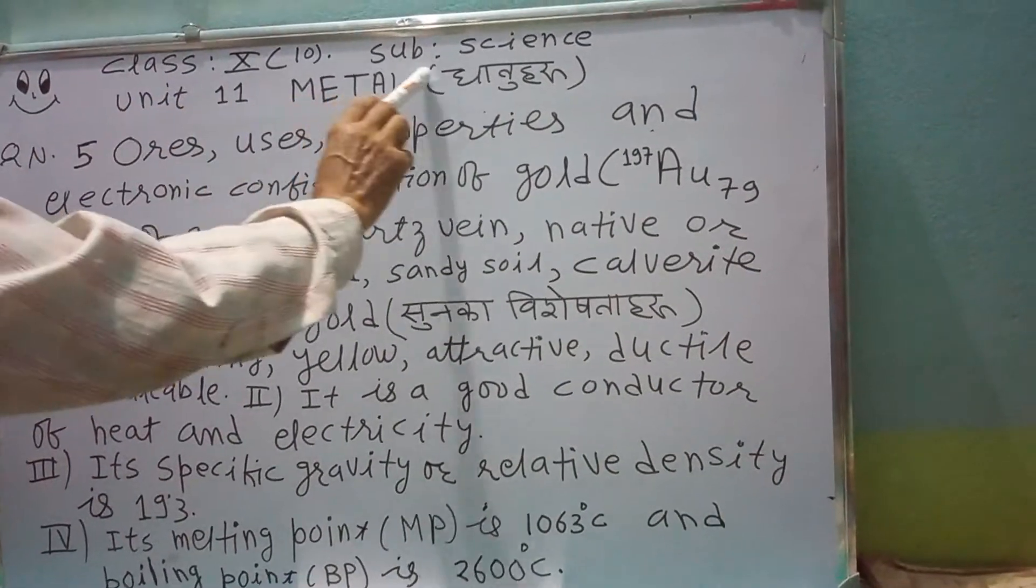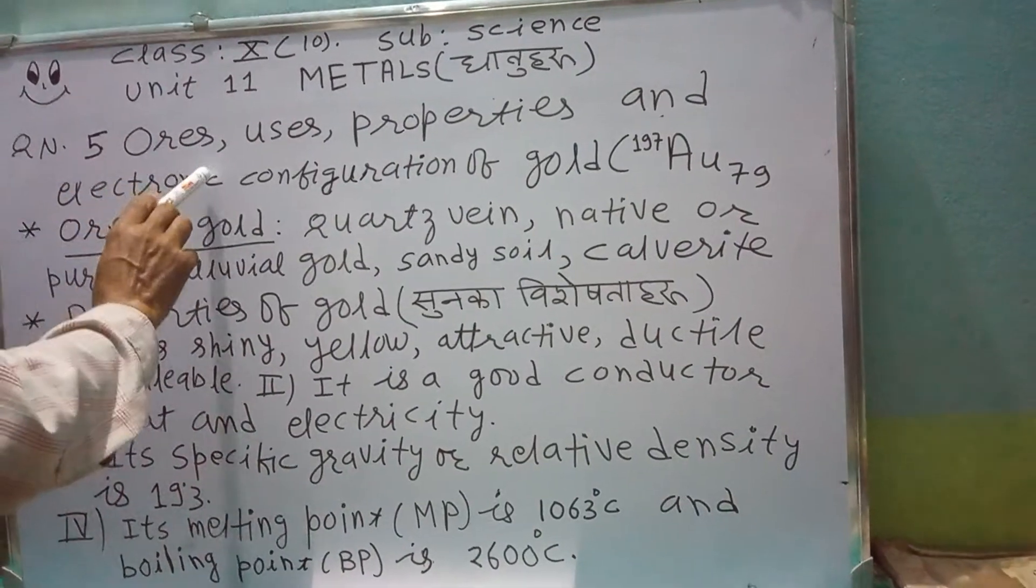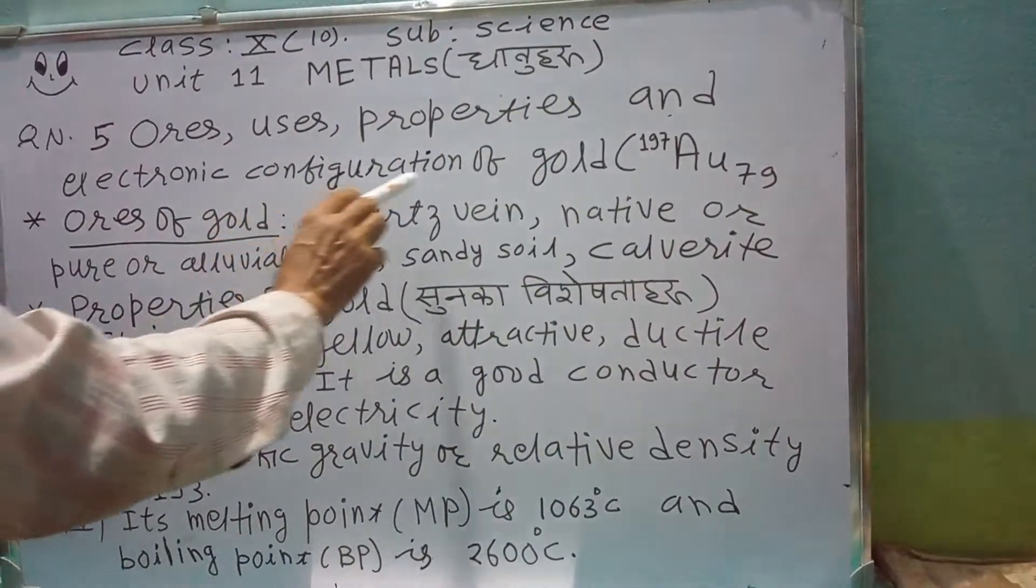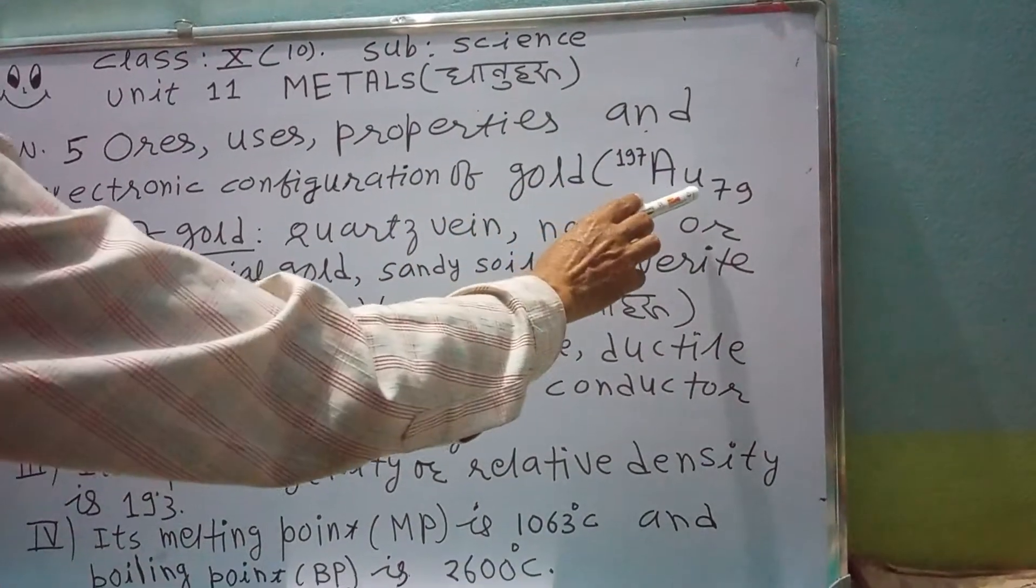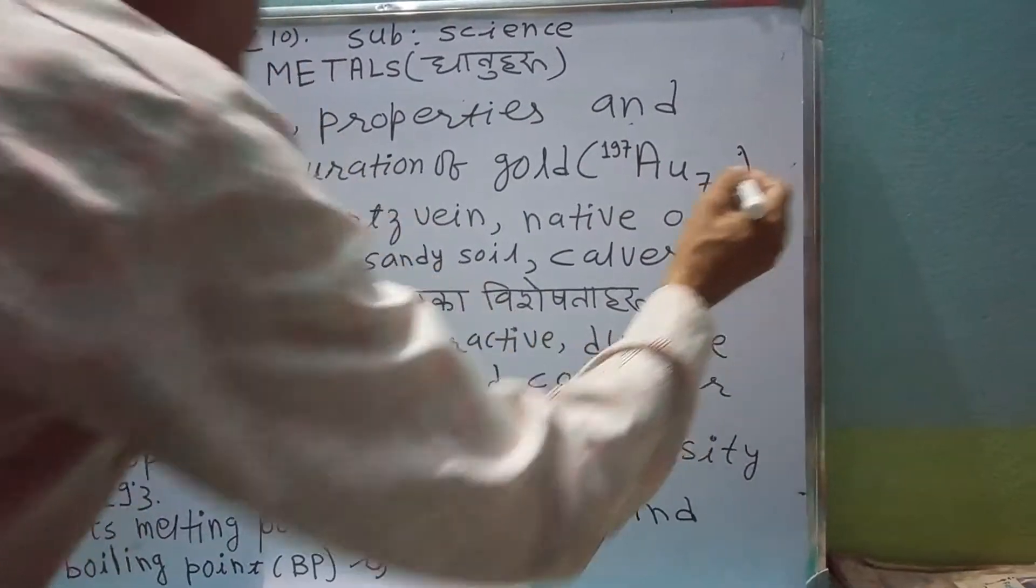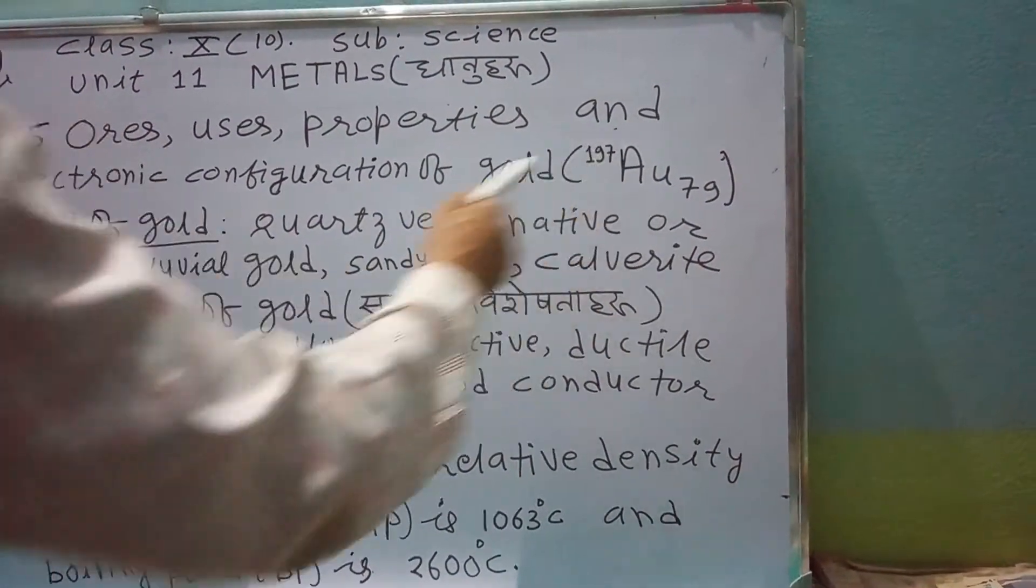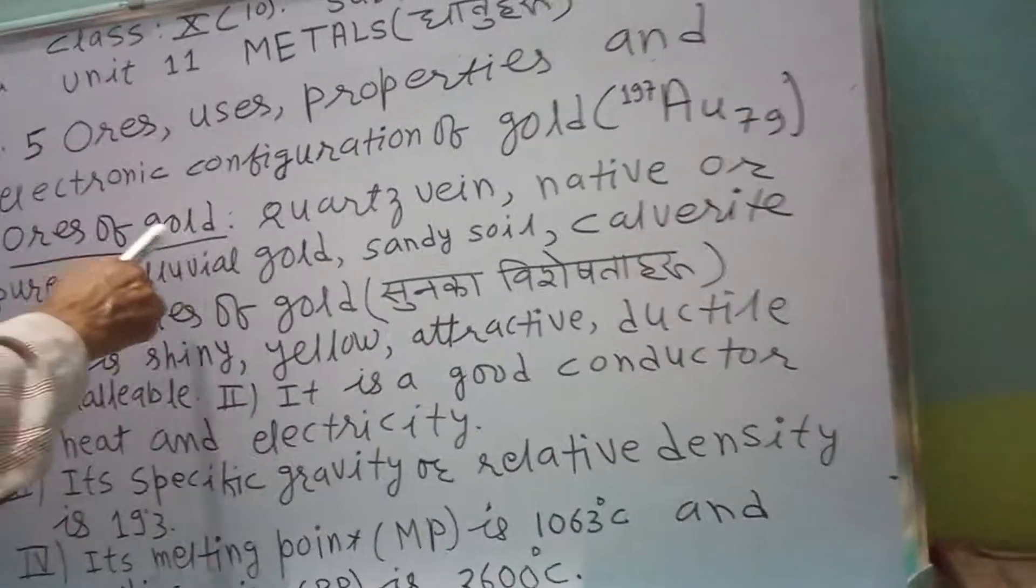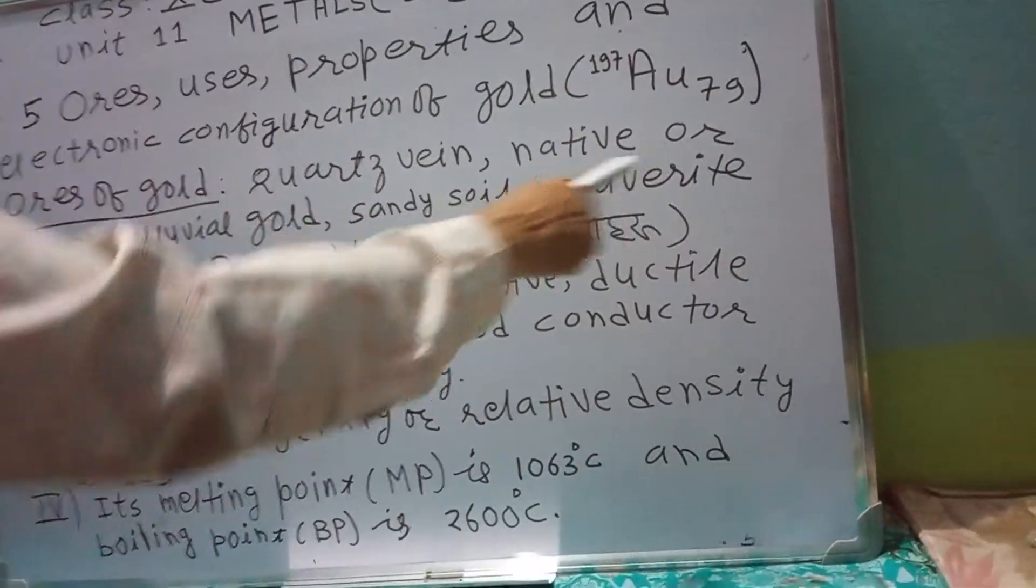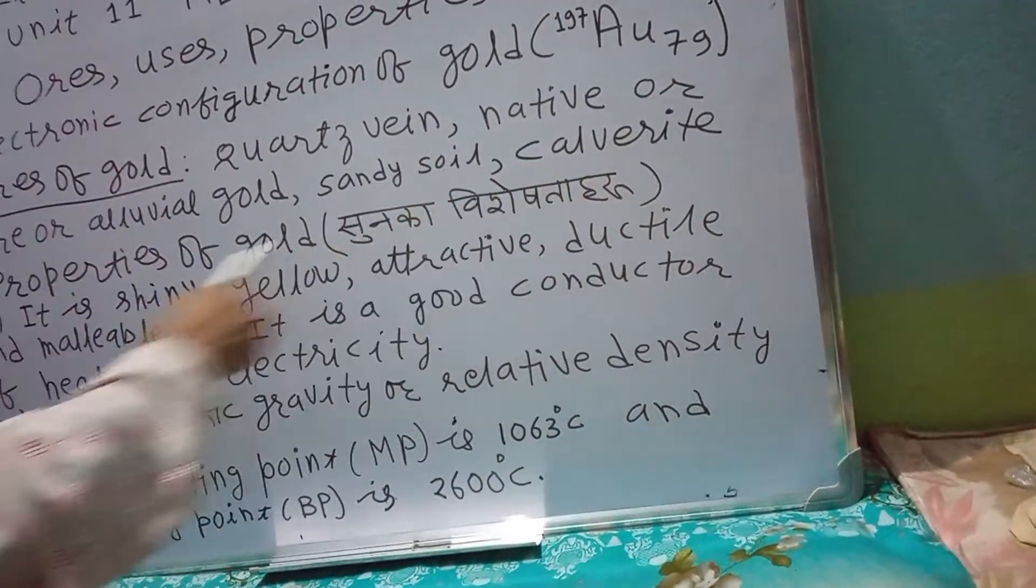Class 10, subject science, Unit 11 metals. Question number 5: Ores, usage, properties and electronic configuration of gold Au 79, atomic number 79, atomic weight 197. Ores of gold: quartz vein, native ore, pure or alluvial gold sandy soil, calverite, etc.